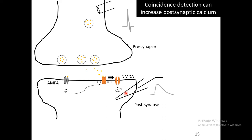The NMDA receptor needs two criteria to open: one is the binding of glutamate, and the second is repelling of the magnesium block. Glutamate binding informs the NMDA receptor of the presynaptic activity status, while repelling of the magnesium block informs it of the postsynaptic activity status. At a molecular level, pre- and postsynaptic activity are coupled — a coincidence is detected — and a large amount of calcium flows in. The resting calcium concentration inside the post-synapse is 100 nanomolar; after coincidence detection and calcium influx, it rises 10-fold to as high as 1 micromolar.